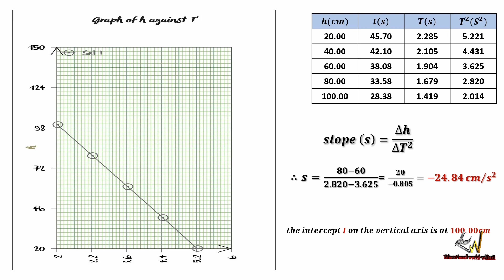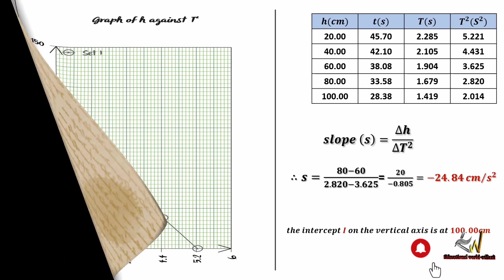The intercept is the point where the graph cuts an axis. The intercept on the vertical axis is at the 100 cm point. The precautions taken in performing this practical are: first, ensuring that the bulb was not hitting the floor while oscillating; and second, avoiding parallax error when taking readings. This concludes the practical — this is how you approach the question smartly for examiners.